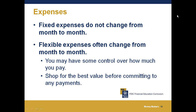Now let's discuss expenses. There are two kinds of expenses. Fixed expenses do not change from month to month — typically you do not have any control over how much you pay. Rent, a mortgage payment, a car payment, or a fixed loan payment are examples of fixed expenses. Flexible expenses, however, change often from month to month, and you may have some degree of control over how much you pay. For example, if you lower your thermostat during the winter, you'll pay less than you did the month before. Think about your needs versus your wants as we go through the list of expenses.